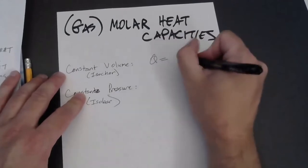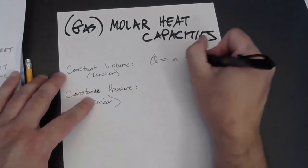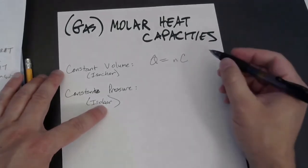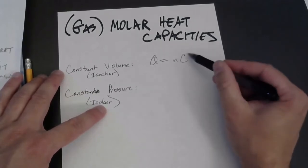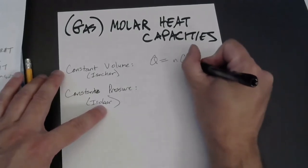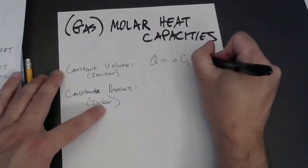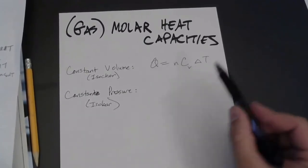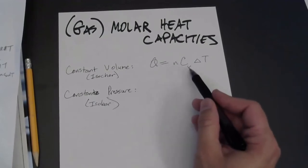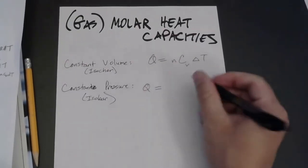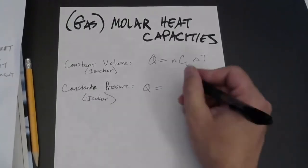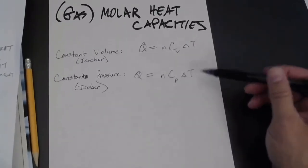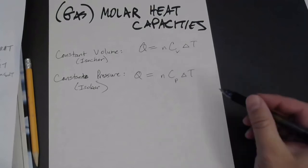For constant volume, the heat required is written as the number of moles times the molar heat capacity — we use a capital C rather than lowercase c, which helps distinguish molar heat capacities for gases from specific heats for solids. The subscript V emphasizes constant volume: Q = nCᵥΔT. This is a lot like calorimetry, where mcΔT has now become nCΔT because instead of specifying heat per kilogram, we're now specifying heat per mole. The same equation applies for constant pressure with subscript P: Q = nCₚΔT.